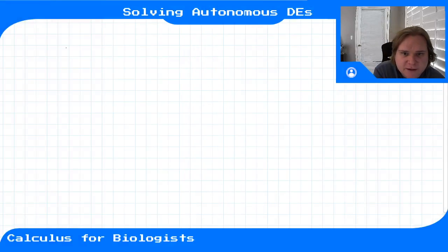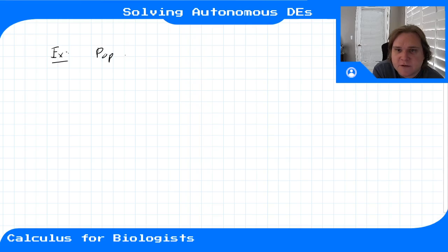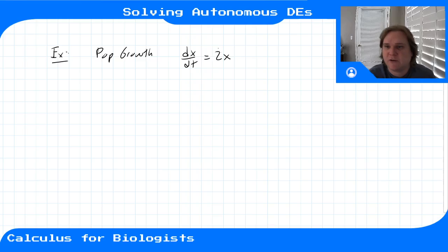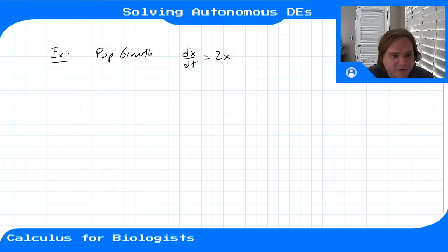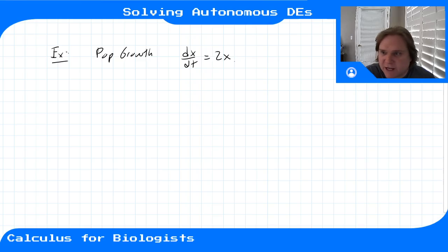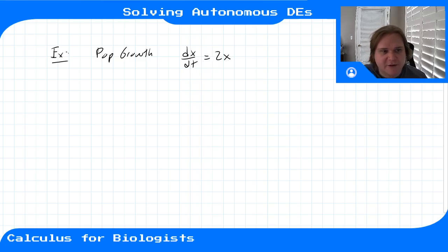We're thinking about dealing with autonomous differential equations, like this example of population growth where dx/dt is equal to two times x. This is an autonomous differential equation because it has a derivative, but it's autonomous because the variable on the right-hand side is x — the variable whose derivative we're taking — and not t, the variable we're differentiating with respect to.